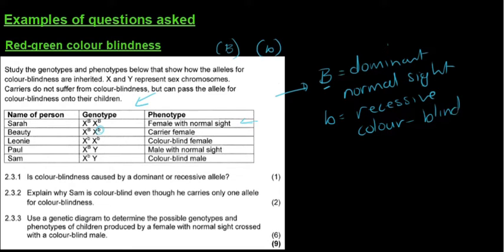So that would be the recessive allele and that would be for color blindness. How do I know it's for color blindness? They've told us that in the question. And then later in the table they also mention that Leone is a color blind female.